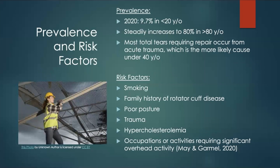Based on the most recent data in 2020, rotator cuff tears affect 9.7% of people who are 20 years old and younger, and this percentage steadily increases to about 80% in adults 80 years old and older. Most total tears requiring surgical repair result from acute trauma in adults under 40. Although the older adult population has a much higher prevalence rate for rotator cuff tears, many are partial or asymptomatic tears that do not require surgical repair.